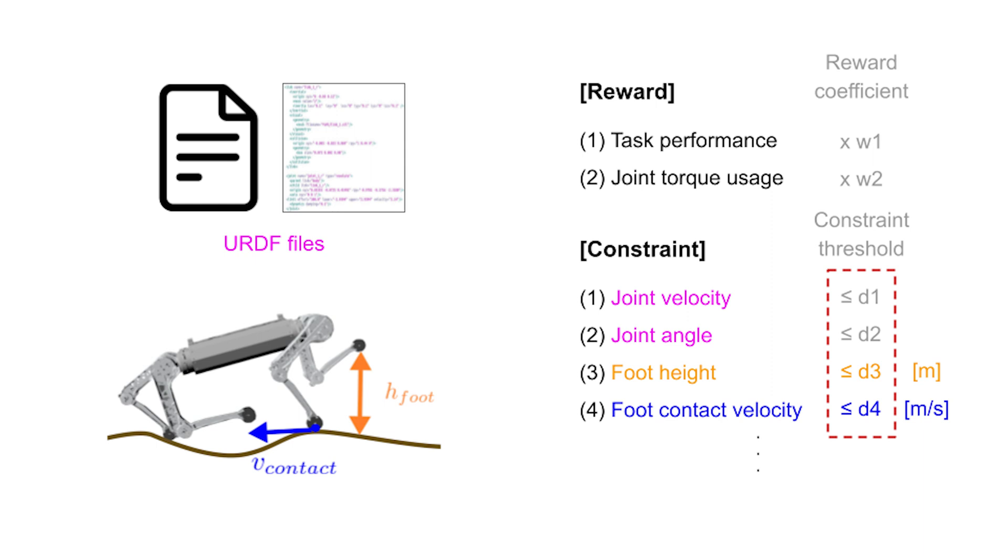Furthermore, constraint parameters and limits can be set more intuitively compared to reward coefficients because they have physical meanings and can even be set automatically from the robot description files.